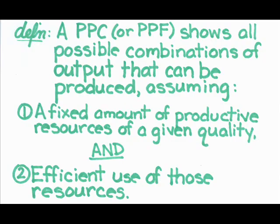By definition, the PPC, or PPF, shows all possible combinations of output that can be produced, assuming two things. One, a fixed amount of productive resources of a given quality, and two, efficient use of those resources.